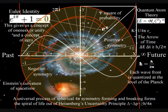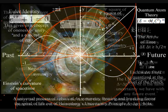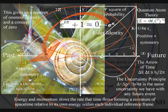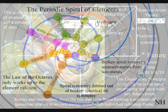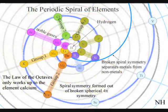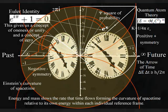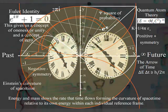This process is totally universal and interactive, from the largest object to the smallest creature, right down to the smallest element of the periodic table, with mass slowing the rate that time flows, forming a curvature of space-time relative to its own energy or mass.